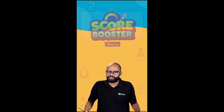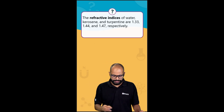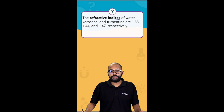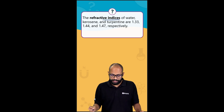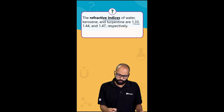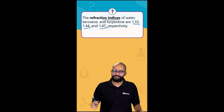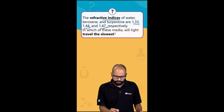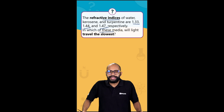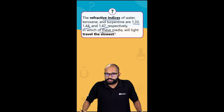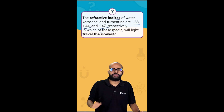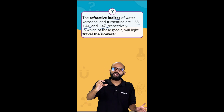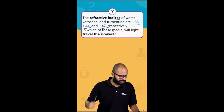Welcome to Scope Boosters. The question for today is: the refractive indices of water, kerosene, and turpentine are 1.33, 1.44, and 1.47 respectively. In which of these media will light travel the slowest? To answer this question, we should know the relation between refractive index and the speed of light in that medium.